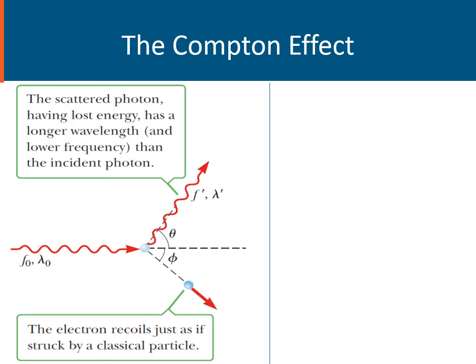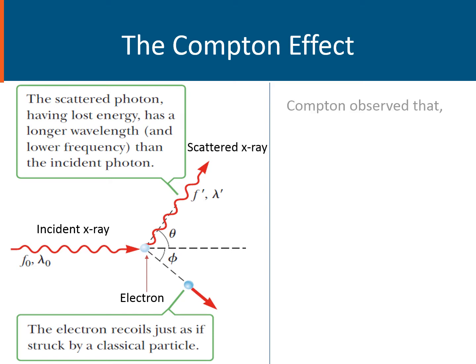In Compton's experiment, he directed an x-ray into a block of graphite, and once the x-ray hits the surface of the graphite, it interacts with the electrons in the graphite. He was able to observe that some of the photons were actually scattered, and his observation showed that the wavelength of the scattered x-ray is much greater compared to the wavelength of the incident x-ray.